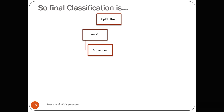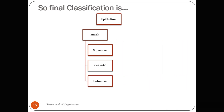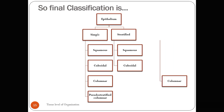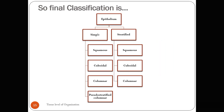Simple epithelium means a single layer of cells, and stratified epithelium means multiple layers. Simple epithelium includes simple squamous, simple cuboidal, simple columnar, and a special fourth type: pseudostratified columnar, which is unrelated to the standard classification scheme. Under stratified there is stratified squamous, stratified cuboidal, stratified columnar, and a fourth special case: transitional epithelium.